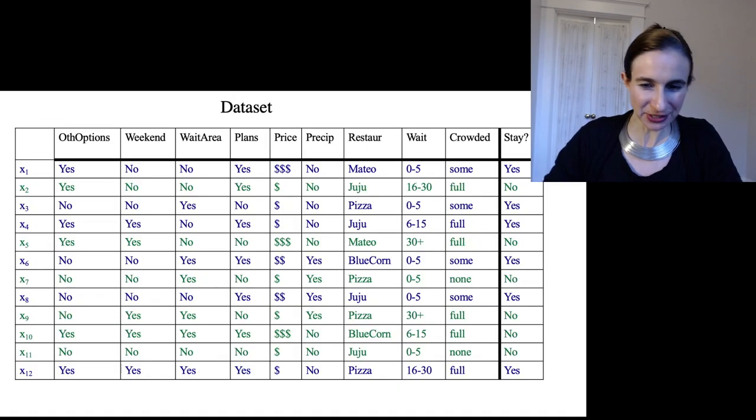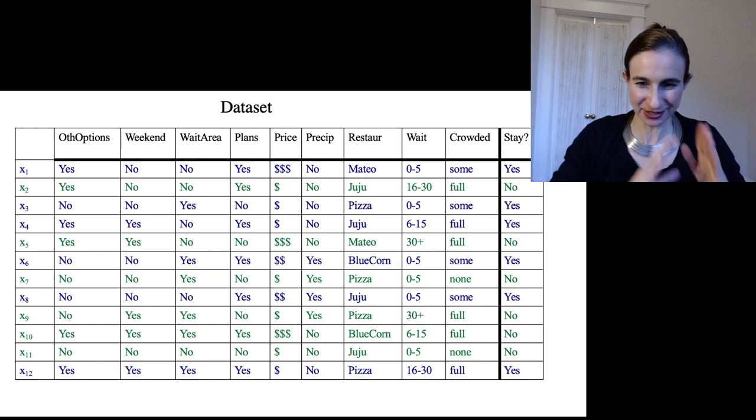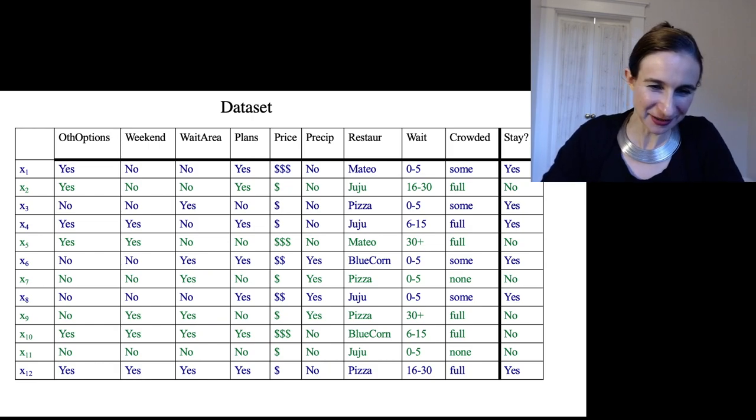So those are features, here is our data set—that's the whole data set. The label is whether or not the customer will stay and wait for the table, and so those are marked in blue and green. Then here are all the observations and the features are on the columns obviously.